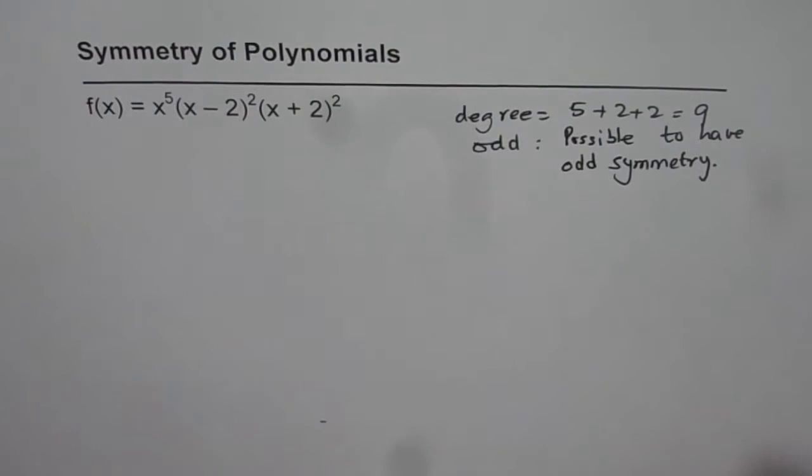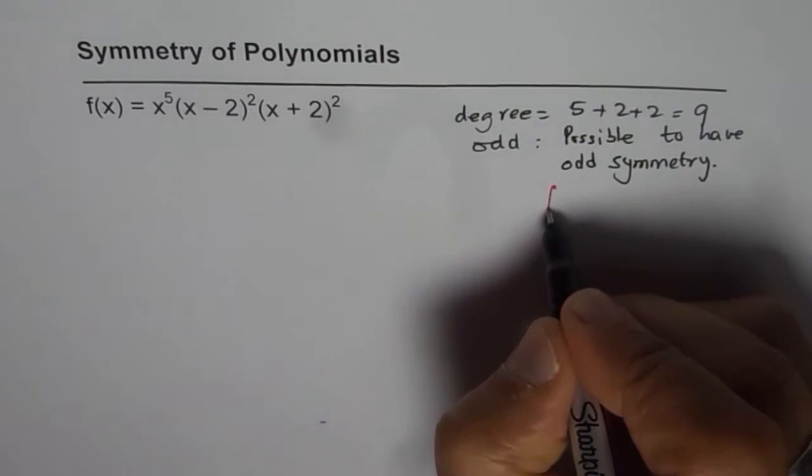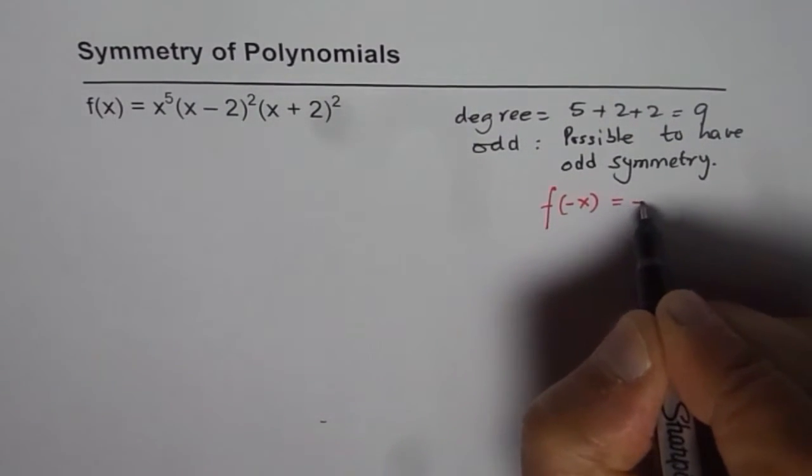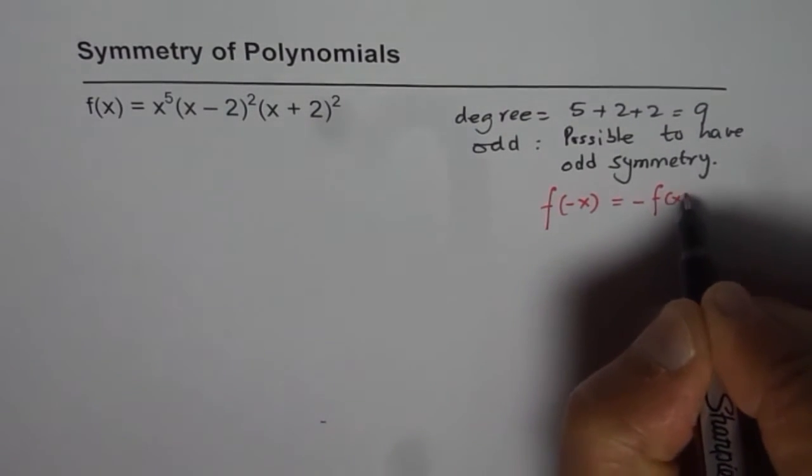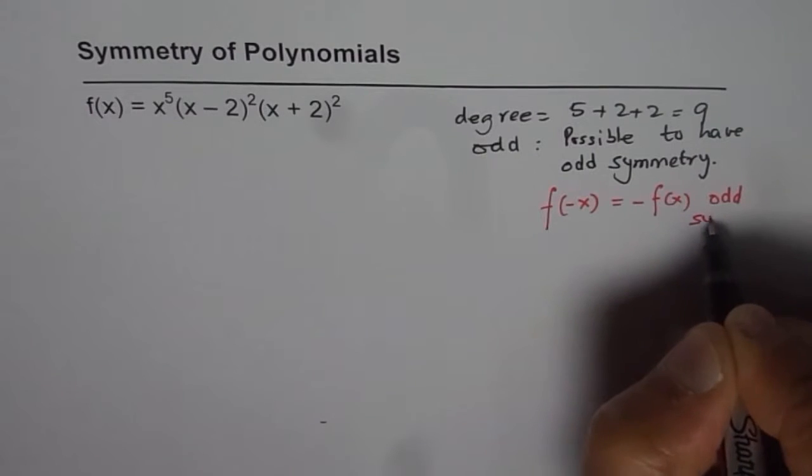Now, how do we test for it? What does it mean that it might have odd symmetry? It means we have to find the value of f(-x), and if we get that equal to -f(x), then it has odd symmetry.